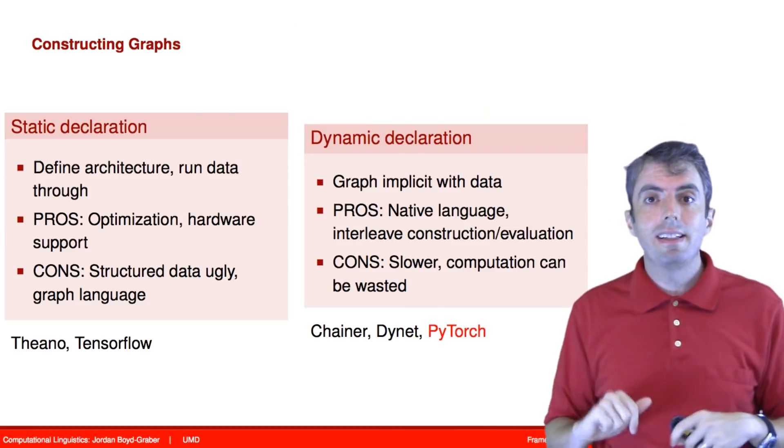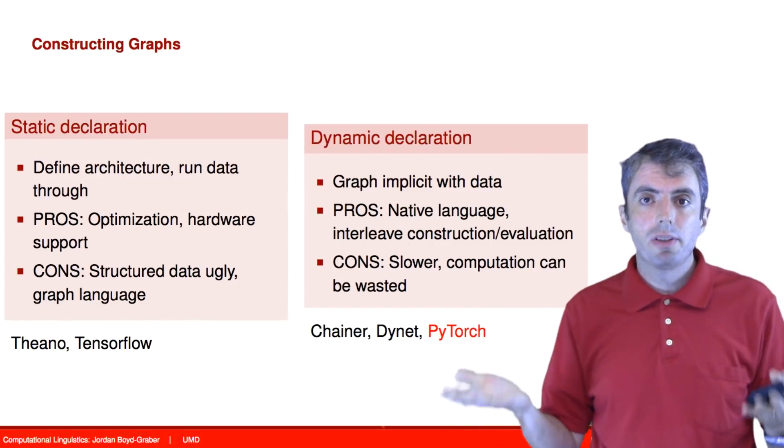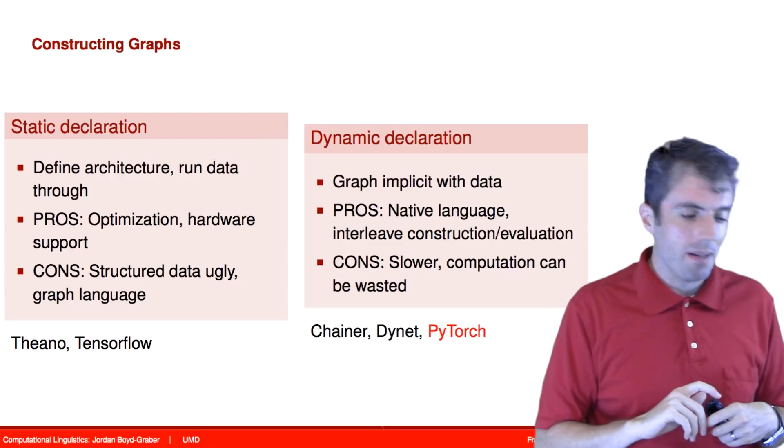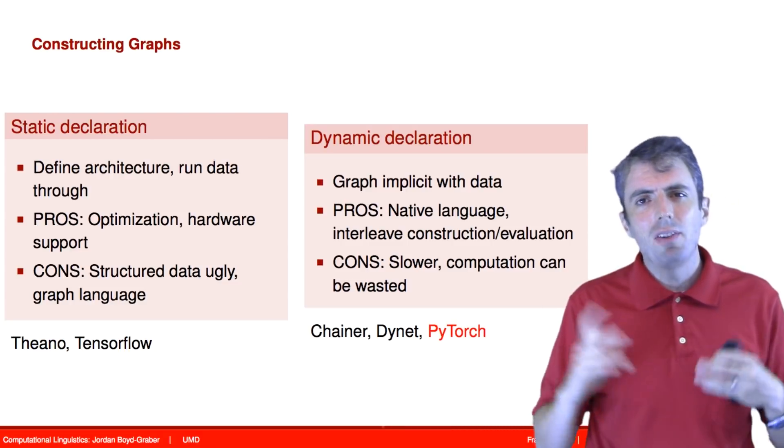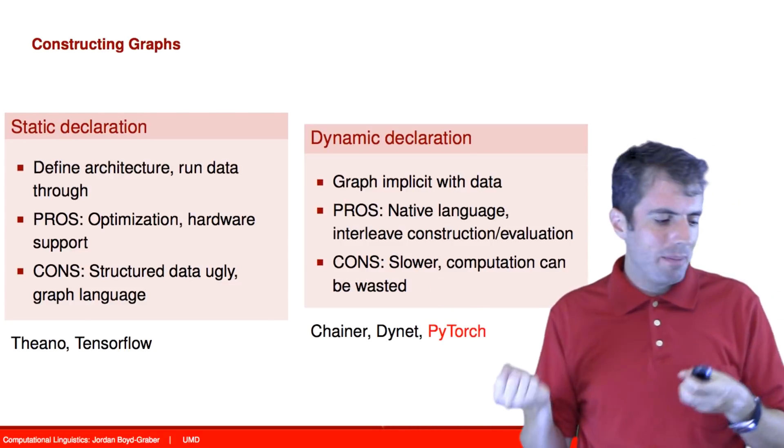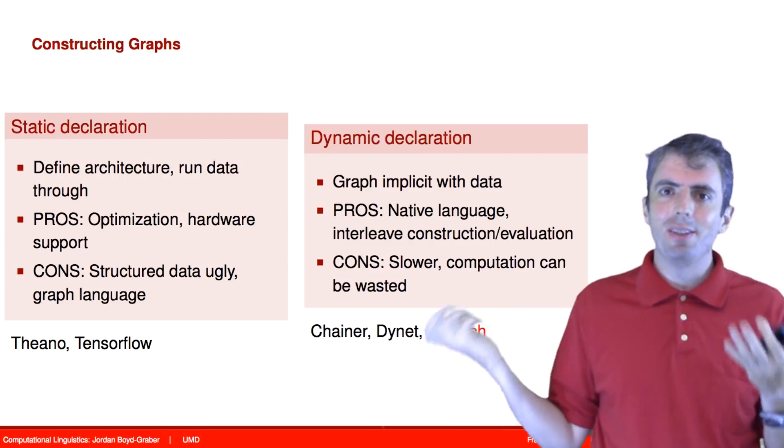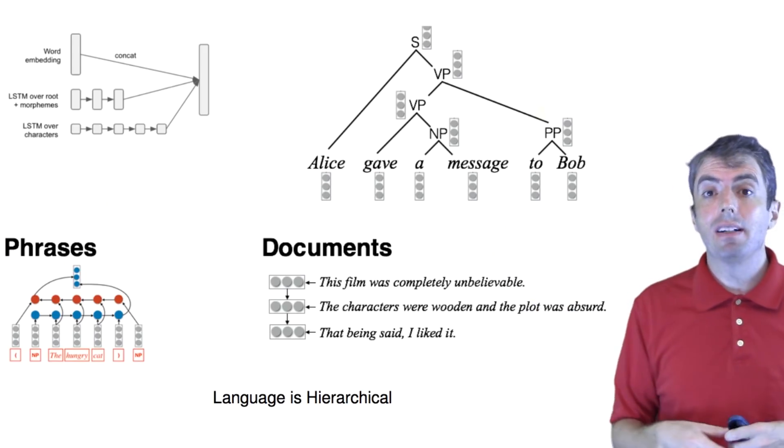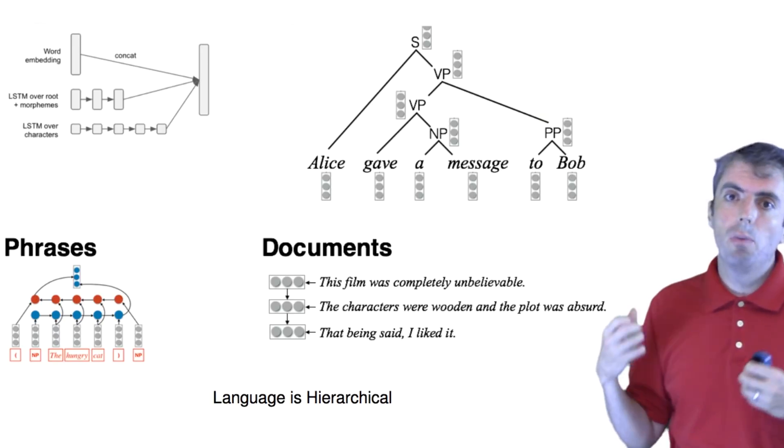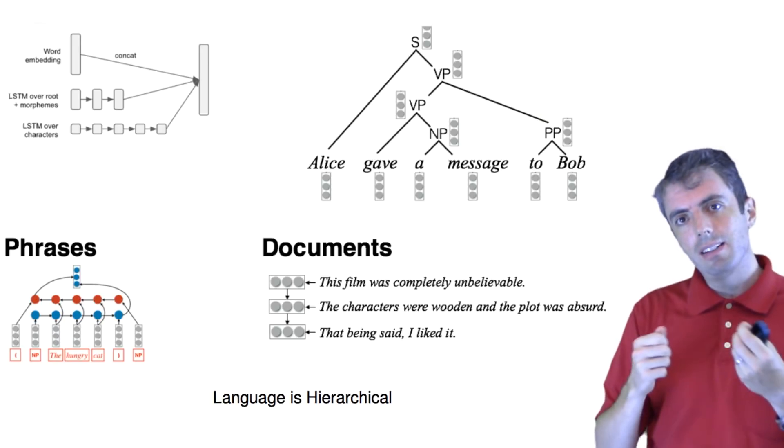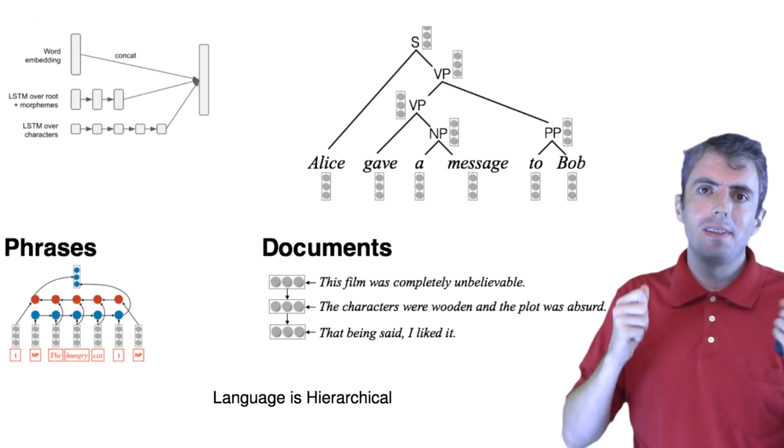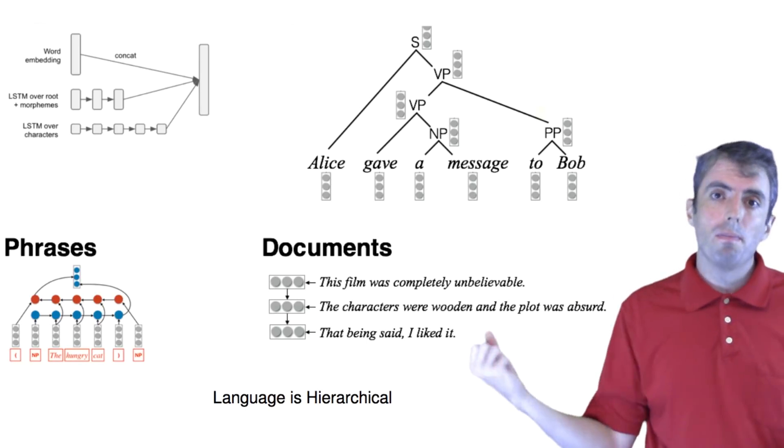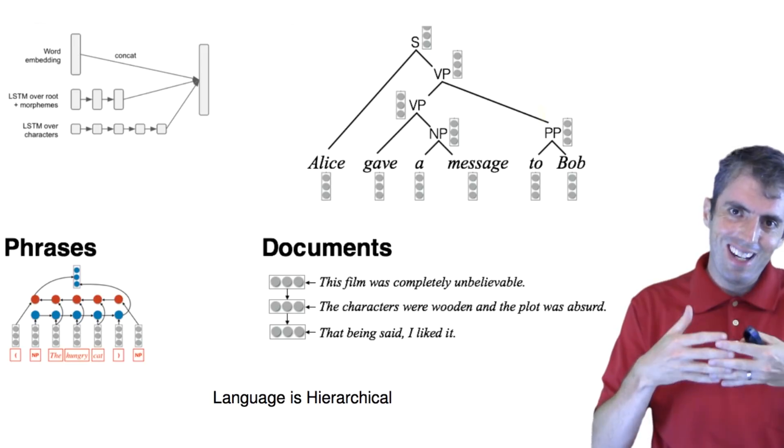That's a price that you're going to pay for the flexibility that you get from these models. As I said, we're going to be focusing on PyTorch. PyTorch is a relatively popular framework that does dynamic computation. And why is dynamic graph construction useful for natural language processing? Hierarchy exists everywhere in language. And so when you construct a word, you have characters. Those characters form stems, suffixes, and prefixes. Those words form phrases together.